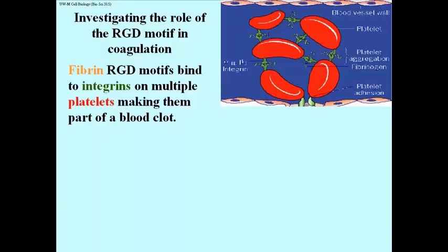So if you cut yourself, you obviously won't bleed all over the floor. Within a few minutes, the blood clots at the wound. Part of that clotting is the aggregation of platelets. It turns out that fibrin or fibrinogen has RGD motifs which can bind to integrins on the platelet surface, forming this aggregate that you see in the picture.